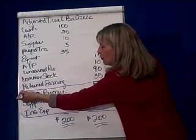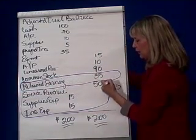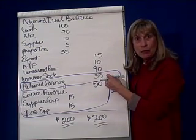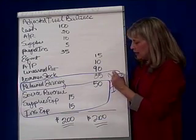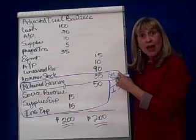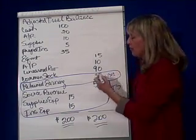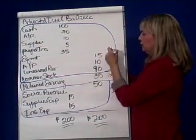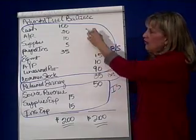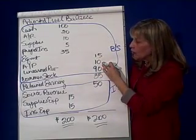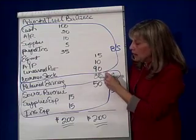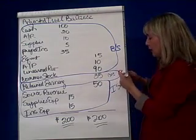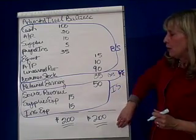The next statement we prepare is the retained earnings statement. This 35,000 — is that our beginning retained earnings or our ending? That's beginning, so we'll have to find what ending is. Then the last financial statement is the balance sheet, which shows assets, liabilities, and stockholders' equity, including common stock and retained earnings. Let's try to do these quickly.